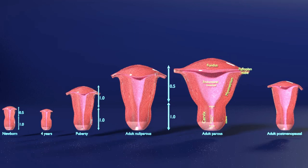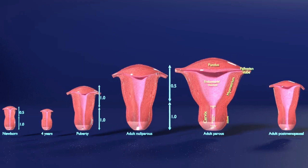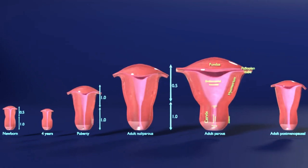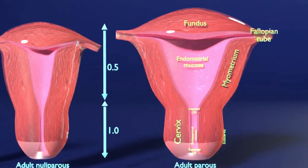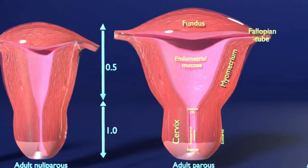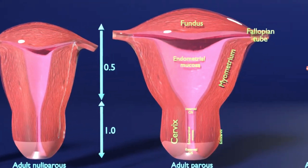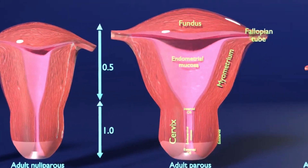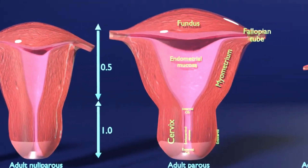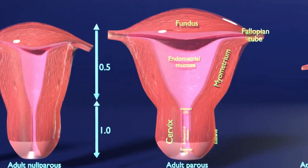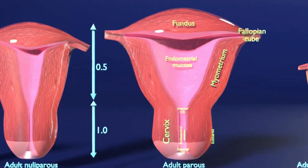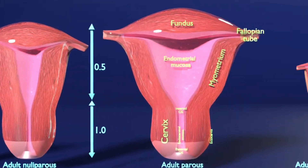In this video, I am going to demonstrate the uterus in different stages of development according to age and their morphology in cut section. The uterus is an inverted pear-shaped muscular organ of the female reproductive system. In humans, the lower end of the uterus, the cervix, opens into the vagina, and the upper end, the fundus, is connected to the fallopian tubes.